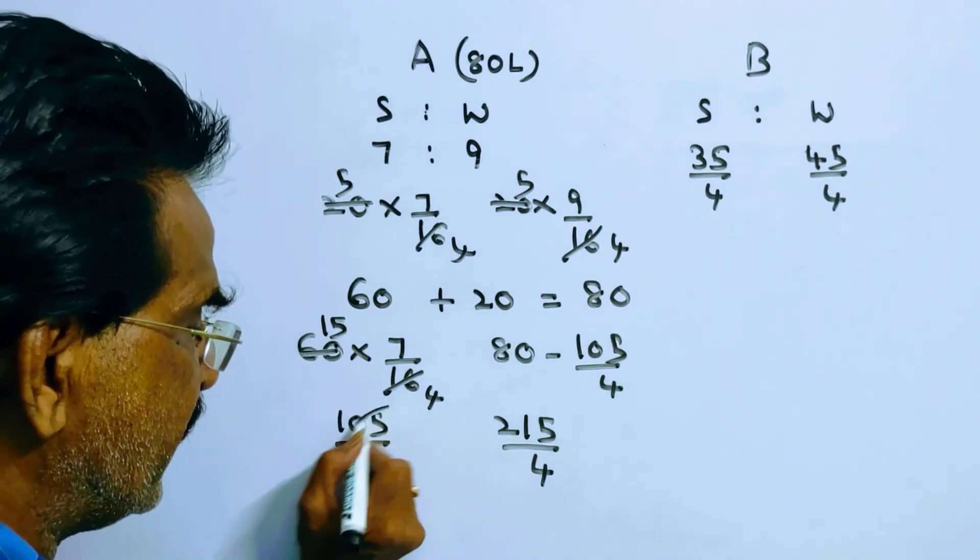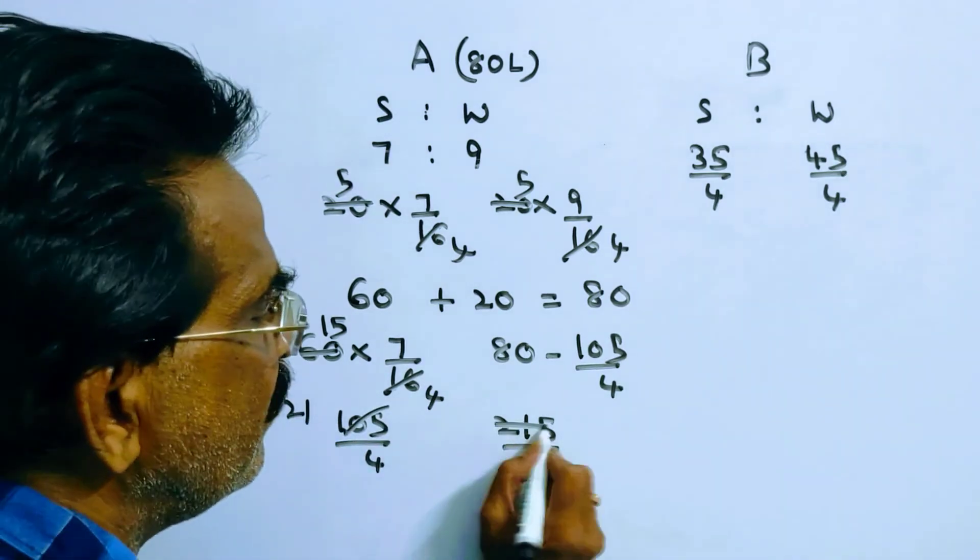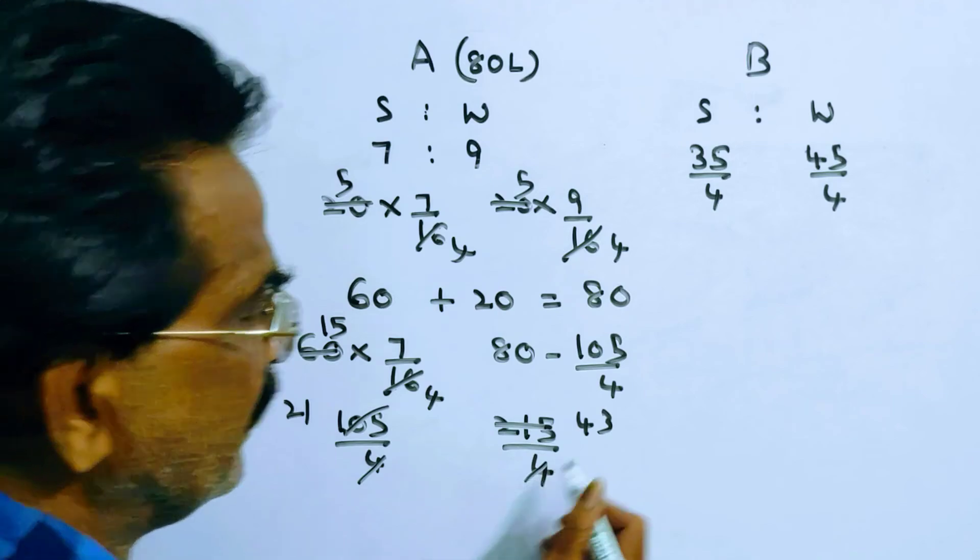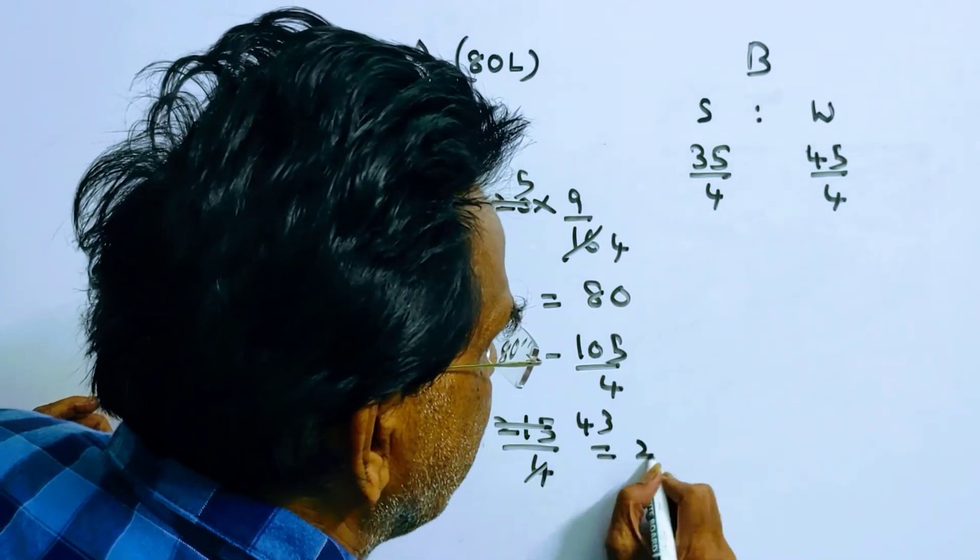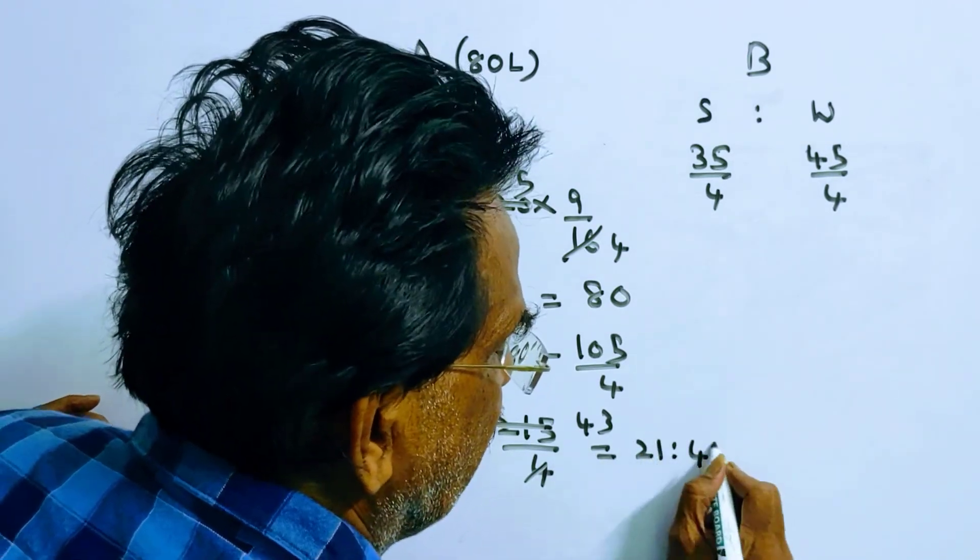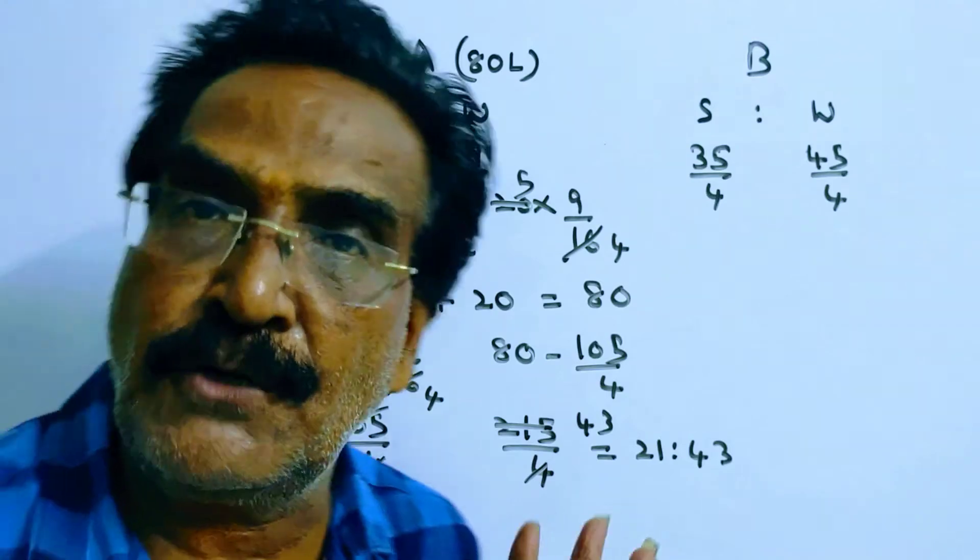So the ratio is 105:215. After canceling, the ratio is 21:43. The present ratio is 21:43.